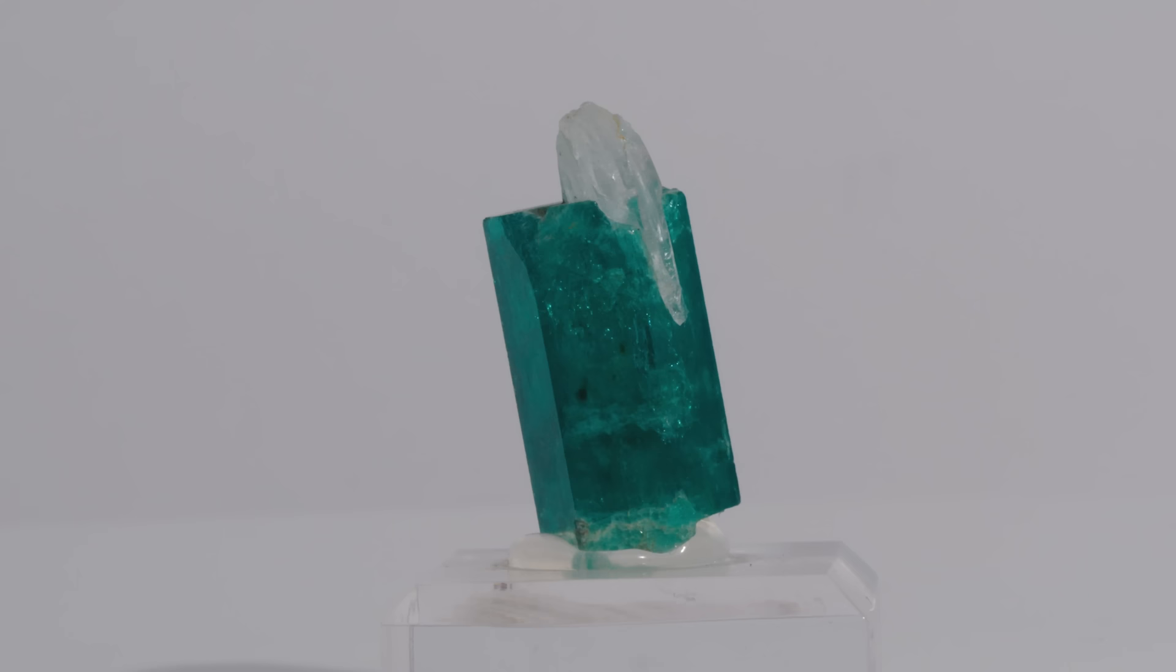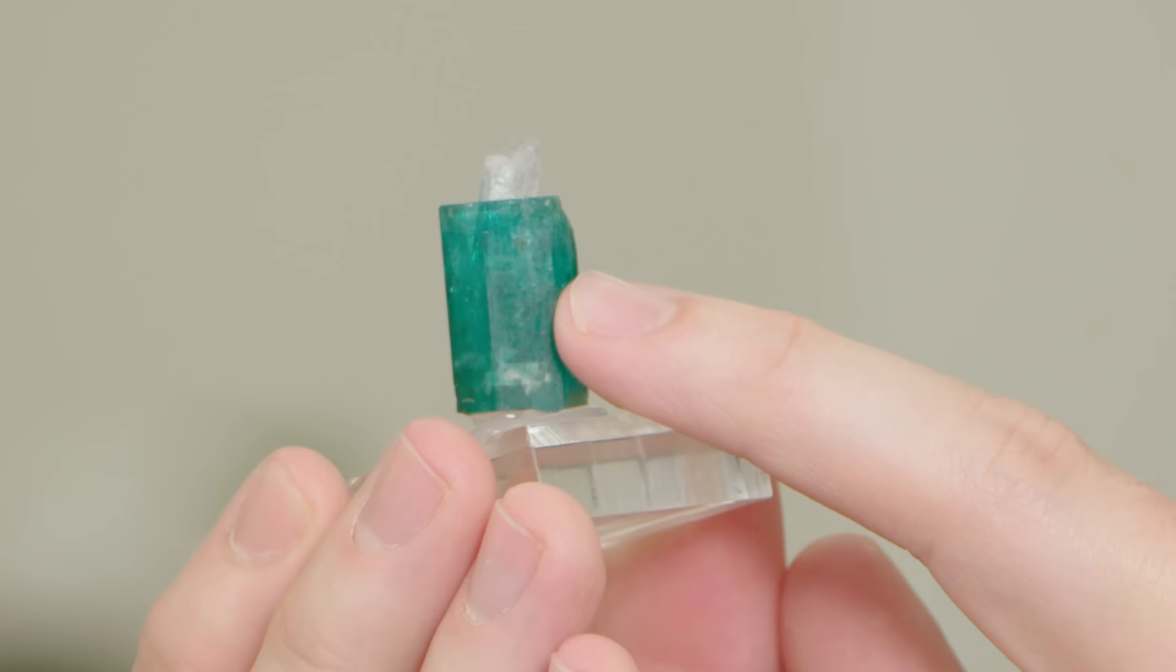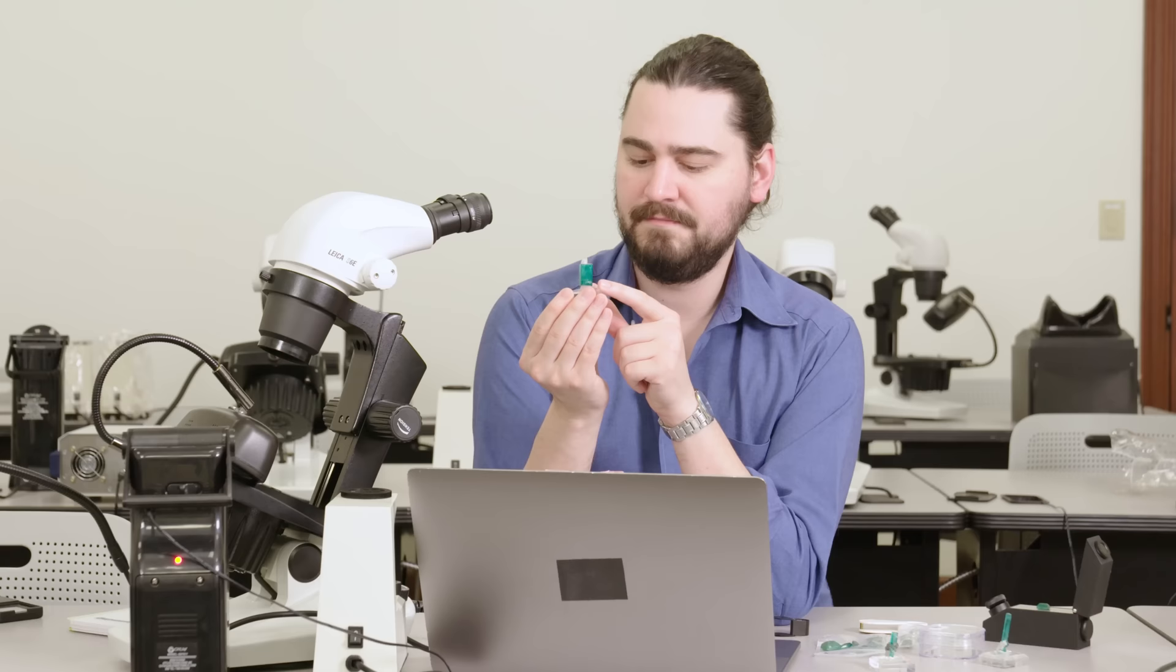What's also interesting about emerald is that certain inclusions occur commonly in certain localities. So depending on what you find inside of your emerald can tell you a lot about where it may have been mined. So let me show you some examples.